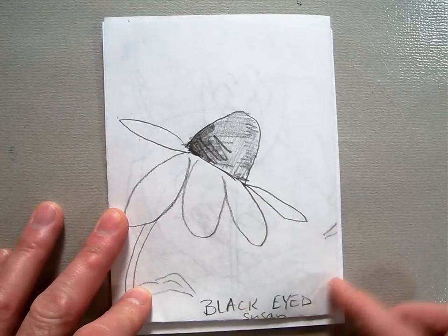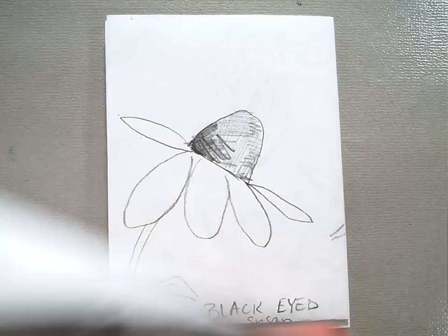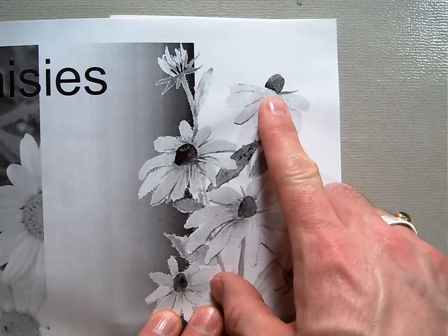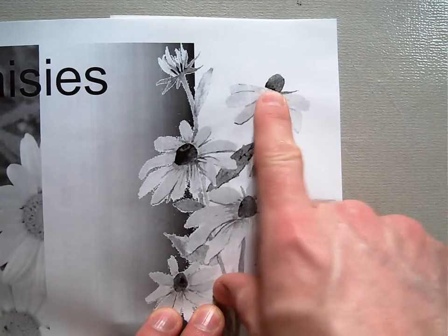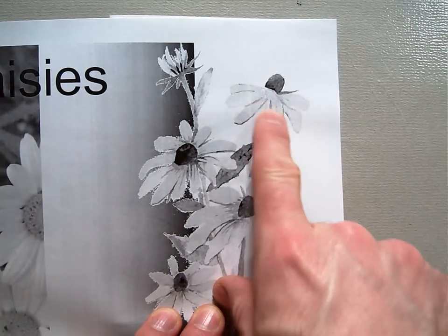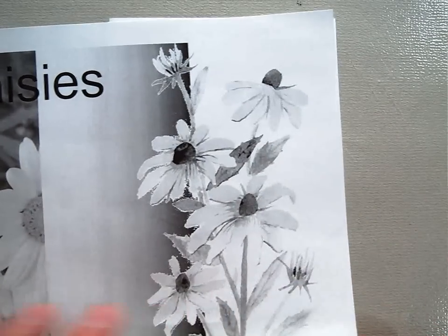Here's an example of my drawing, and here's an example of that photograph of another artist. So here's that kind of gumdrop shape center with the petals overlapping coming out the side.